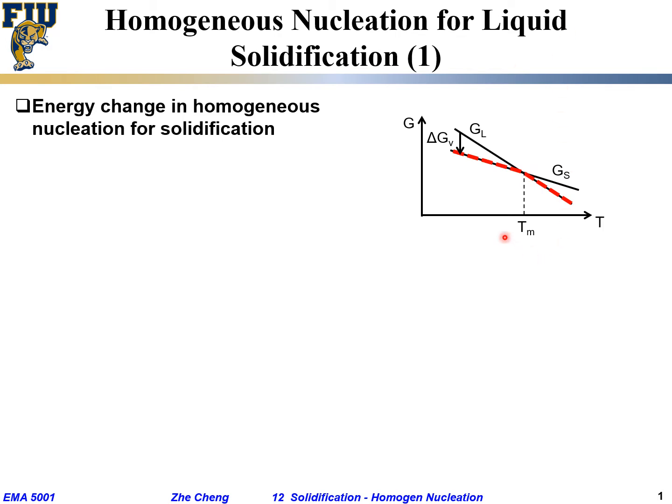The solid line and the liquid line cross at a certain point. That crossing point, when the solid energy equals the liquid energy, is our so-called equilibrium melting point.